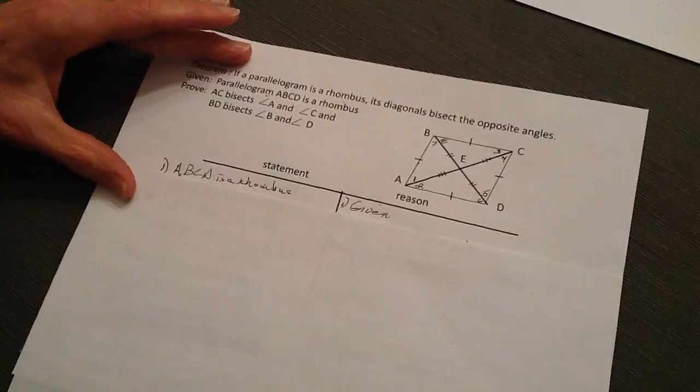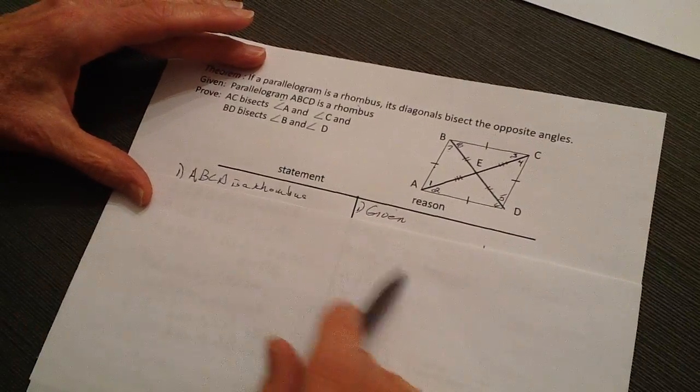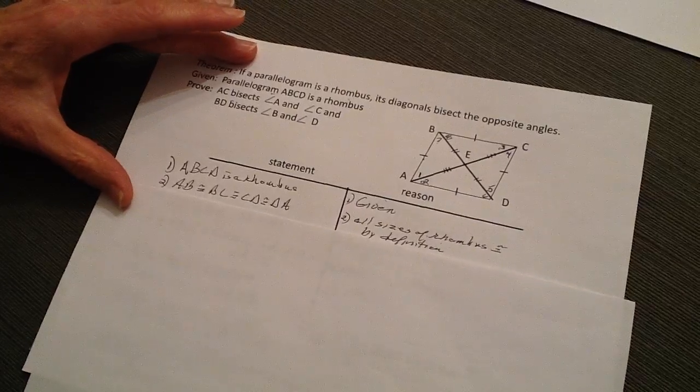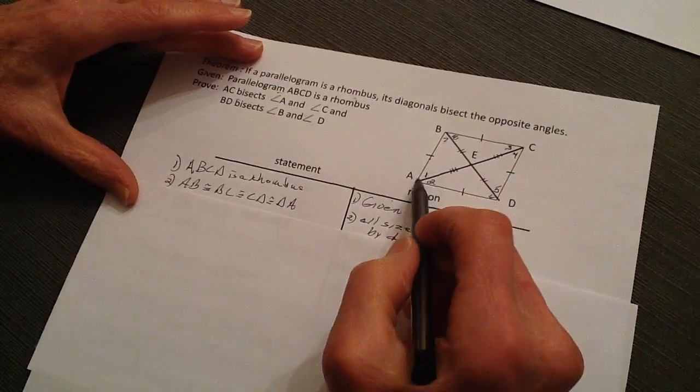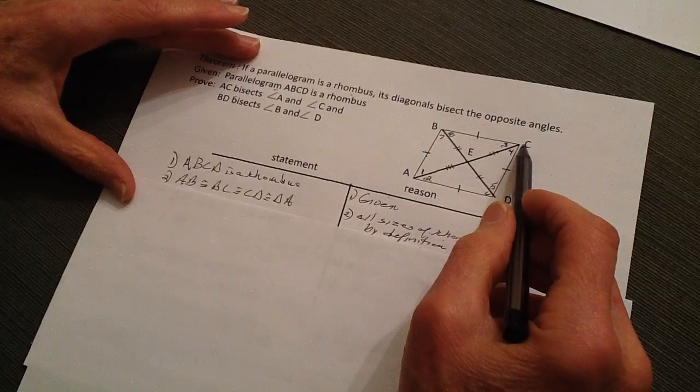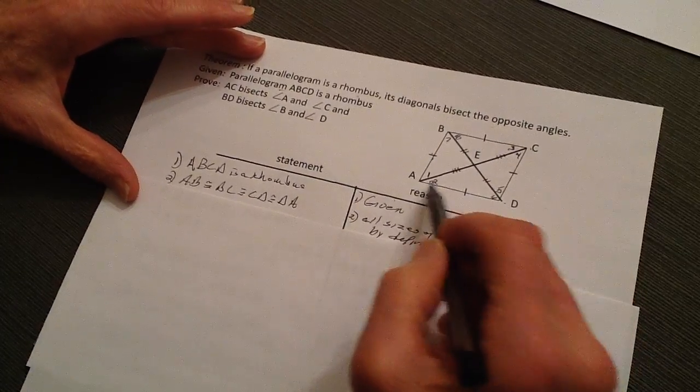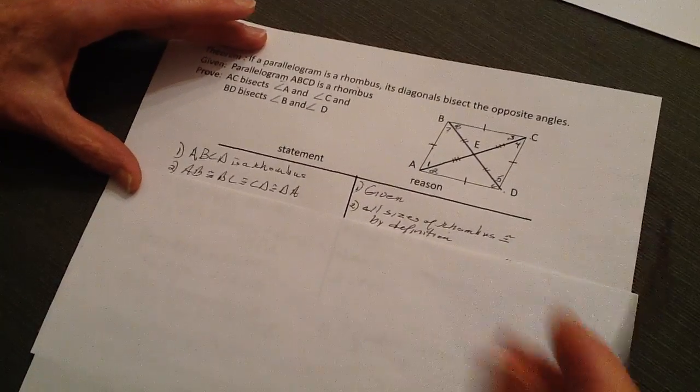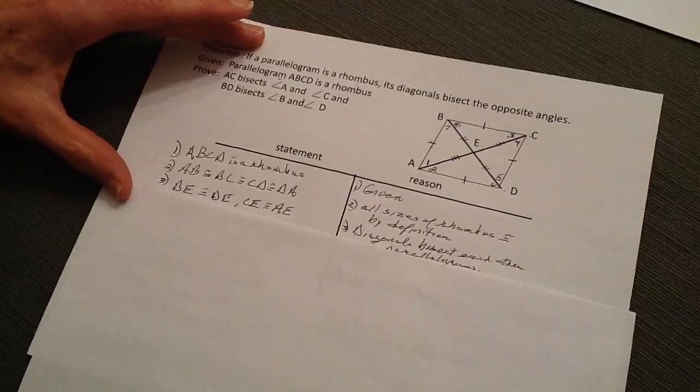So the first thing is we've got ABCD as a rhombus, which in turn means it's a parallelogram also, and therefore all the sides are equal. AB, BC, CD, and DA are all congruent to each other because by definition all the sides of a rhombus are equal.